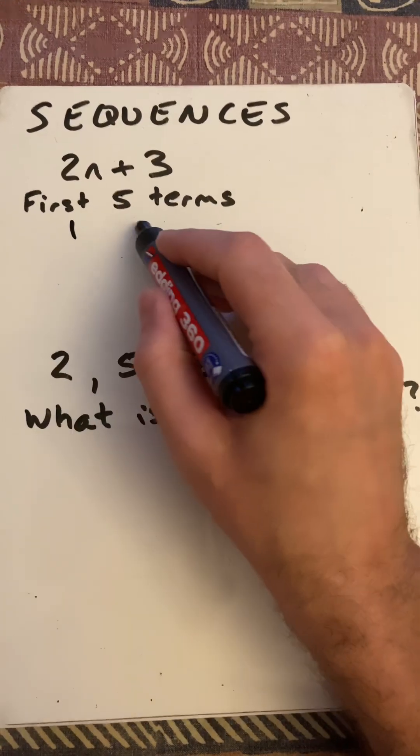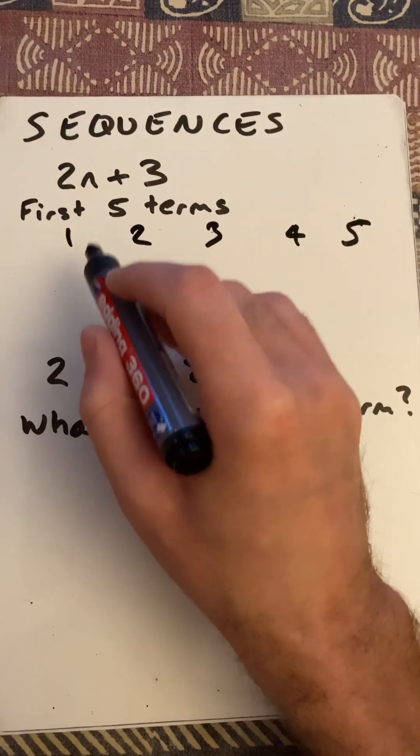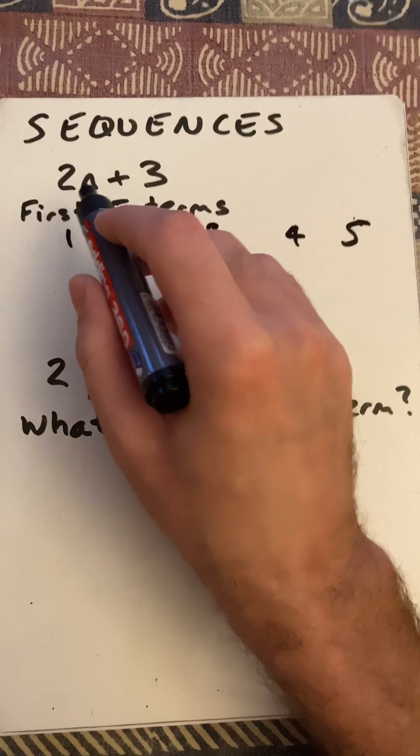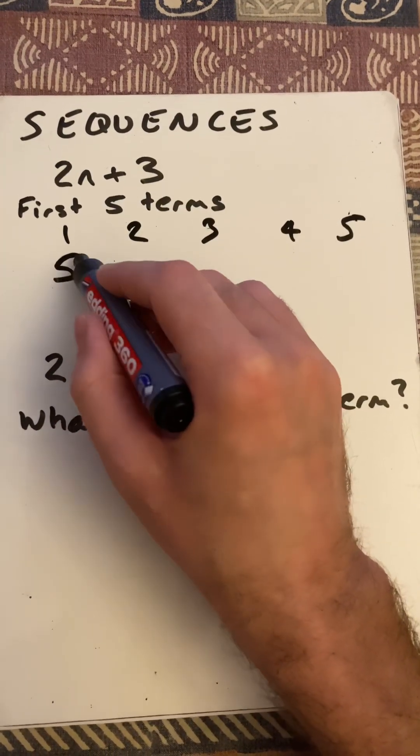So to find the first five terms, we're going to substitute in the first five numbers and replace n with them. So 2 times 1 plus 3 is 5.